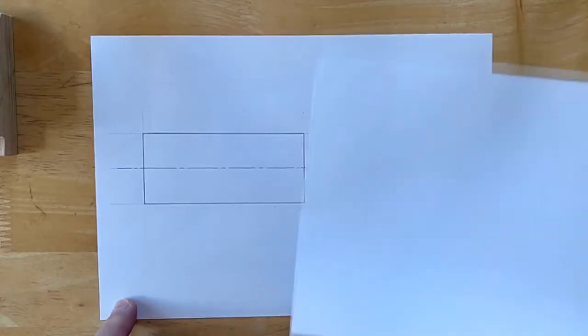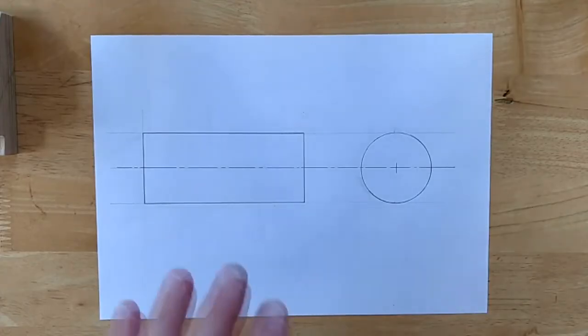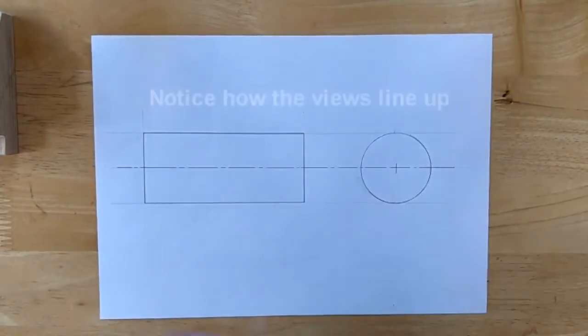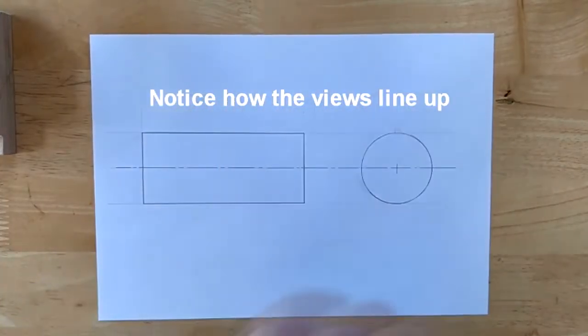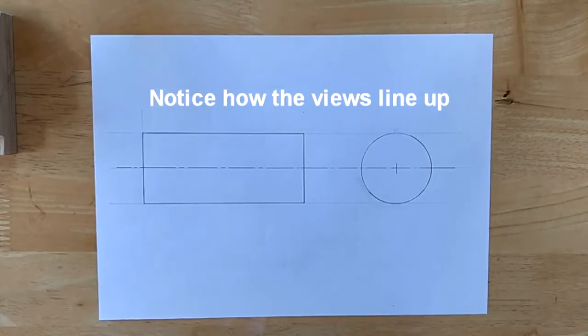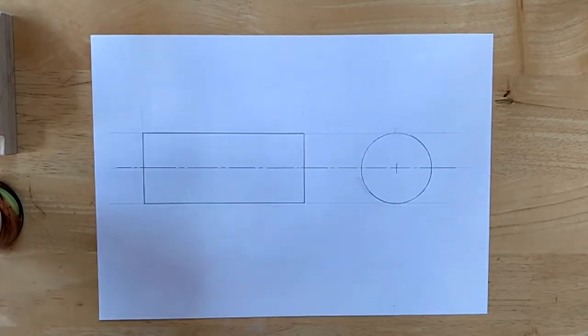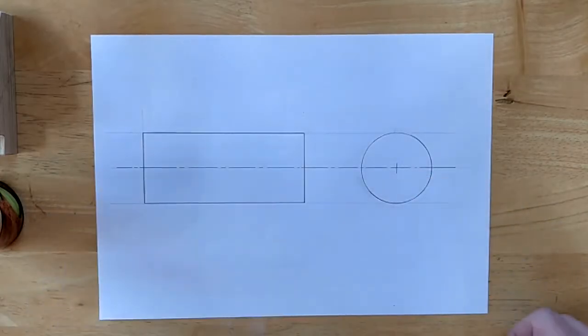So we need other views to help us understand the shape. In this case we would draw the top view to show what the object looks like from the top. Those two views together define that cylinder quite nicely, and we could put sizes on. It's important to split the object up into more than one view, and also important how we lay the views out on the paper.